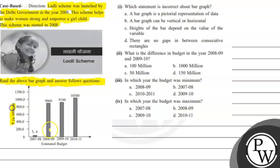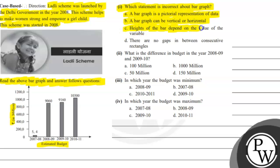Rupees in million — estimated budget. First question: which statement is incorrect about a bar graph? Option A: a bar graph is a pictorial representation of data. Option B: a bar graph can be vertical or horizontal. Option C: height of the bar depends on the value of the variable. Option D: there is no gap in between consecutive rectangles.